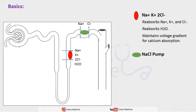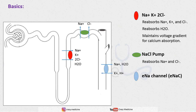Next is the sodium-chloride pump, which is present in the distal convoluted tubule — it reabsorbs sodium and chloride. And last is the ENaC channel, which is present in the collecting duct. It helps in reabsorption of sodium and water and excretion of potassium and hydrogen ions.